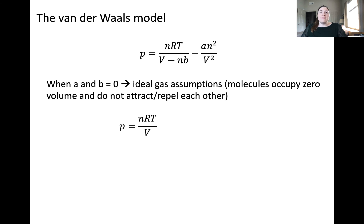This is rational because when a is equal to zero, gas molecules do not attract one another or repel one another. And when b is equal to zero, gas molecules occupy zero volume, otherwise known as the ideal gas assumptions.